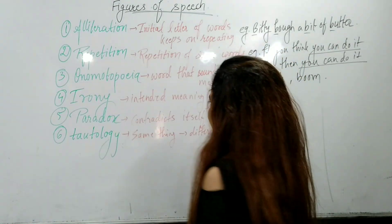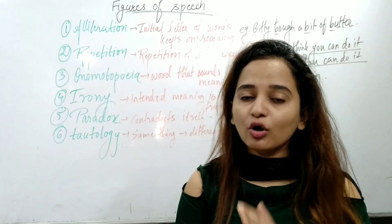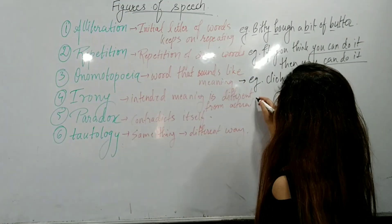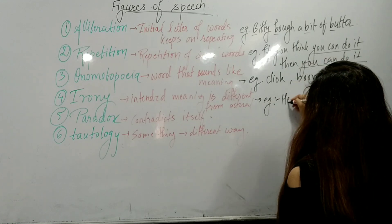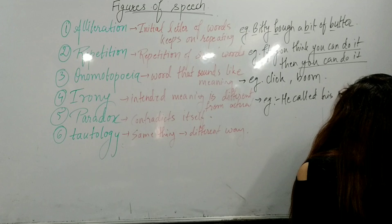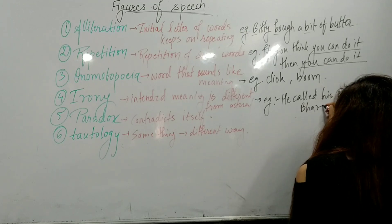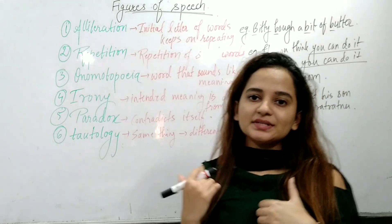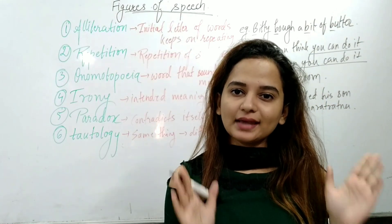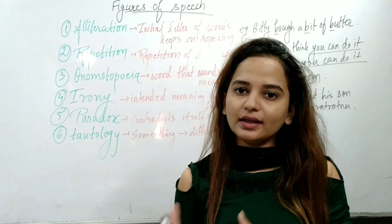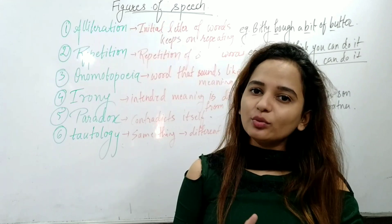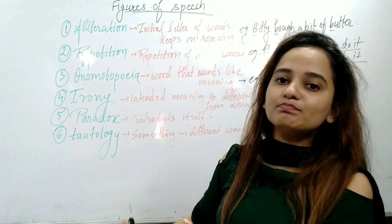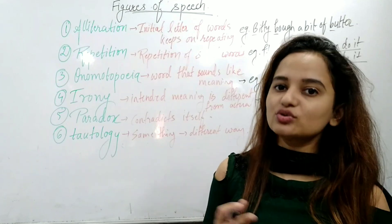Next figure of speech is irony. In irony, the actual meaning is different from what is said. For example: 'He called his son Bharat Ratna.' In this sentence, the actual meaning is different — perhaps the son has not achieved anything, but the father sarcastically or proudly refers to him as Bharat Ratna. That contrast of intended versus literal meaning is irony.